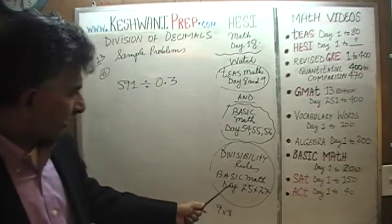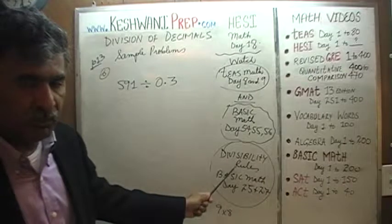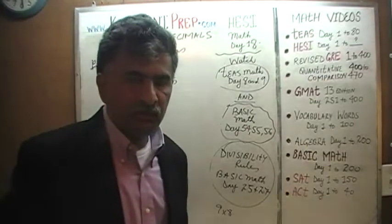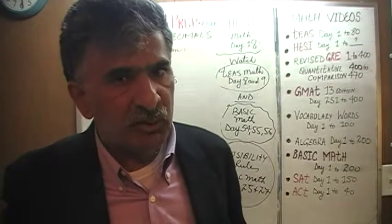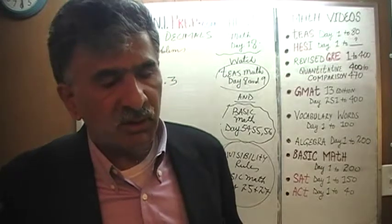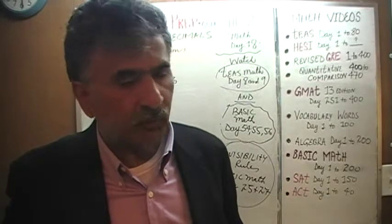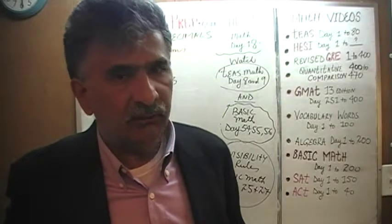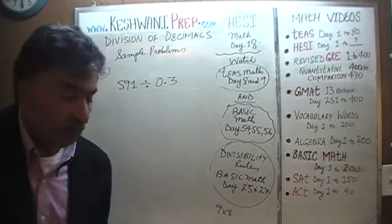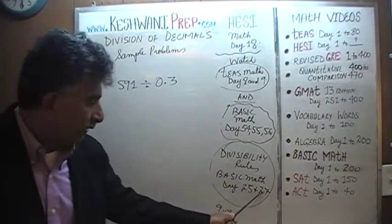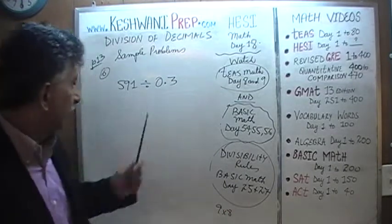The last remark here has to do with the divisibility rules. You must know your rules of divisibility. You must be able to tell, simply by visual inspection, if a given number is divisible by two, three, four, five, and so on. We learn all of those things in the divisibility rules on day number 25 and 26, and 27 of Basic Math. Let's get going.